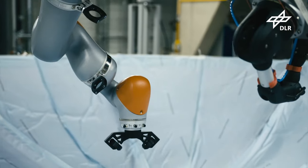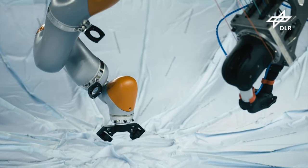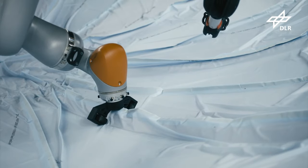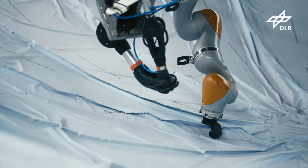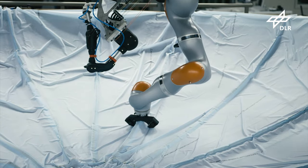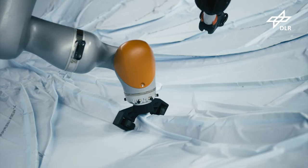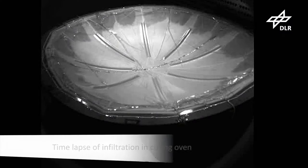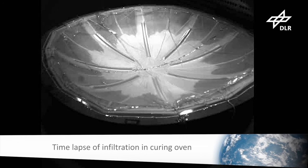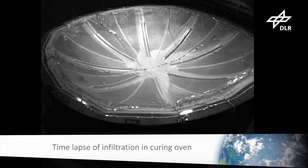At the end of the vacuum bagging, the membrane is compacted in the narrow radii by the multi-kinematic gripper. This occurs continuously and pressure-controlled normal to the tool surface. Finally, the pre-form is infiltrated with RTM epoxy resin and cured.